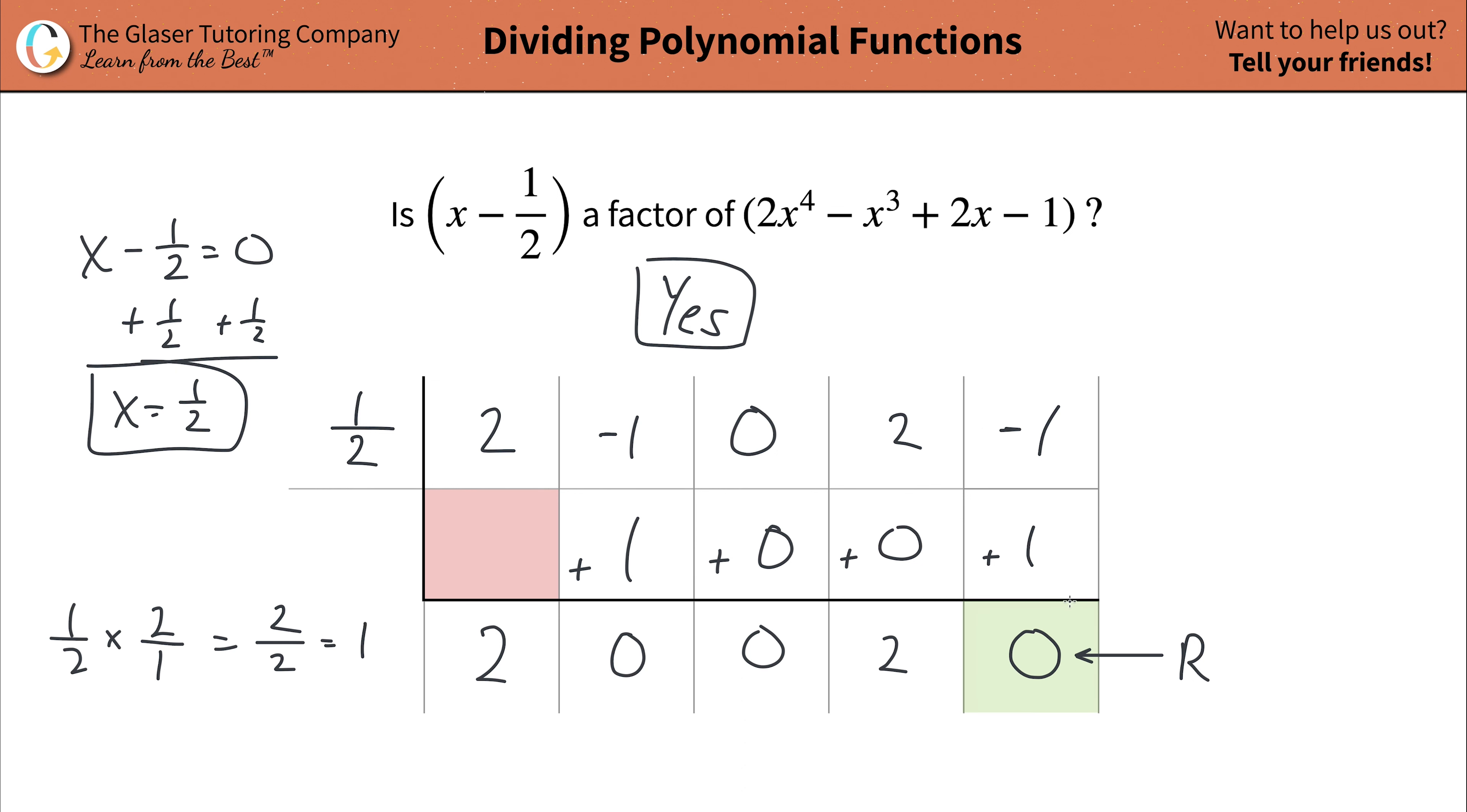If this wasn't zero, any other value other than zero, 0.0001872, anything other than zero, 2,987,146, doesn't make a difference. Then the answer would be no, it is not a factor.